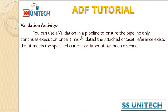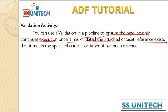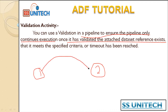You can use the Validation Activity in a pipeline to ensure the pipeline only continues execution once it has validated that the attached dataset reference exists. For example, we are having a blob storage as a source and SQL Server as the destination table. We want to load from source to destination, and in the source we are getting the file every 30 minutes — it may come at 30, 31, or 32 minutes with a little delay.